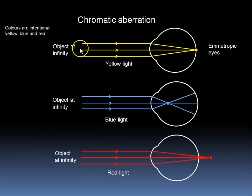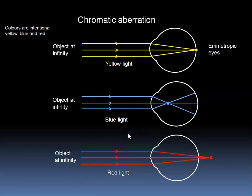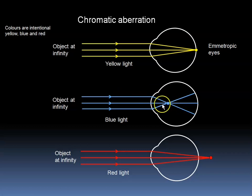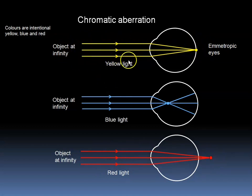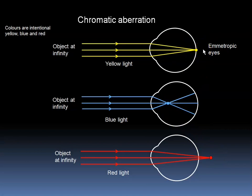Chromatic aberration occurs because different wavelengths of light undergo different amounts of refraction. In other words, the index of refraction of a medium is different for different wavelengths. We generally describe the index of refraction as that for yellow light. Blue light will undergo more refraction than red light. In this case, we show the yellow light is focused on the retina in this particular patient. The blue light and the red light, however, will not be focused in the same plane, and this results in chromatic aberration.